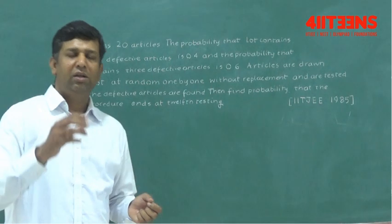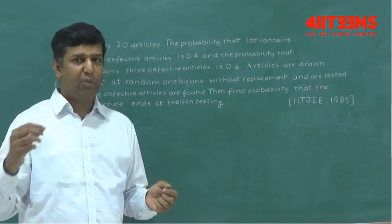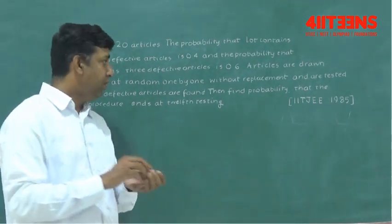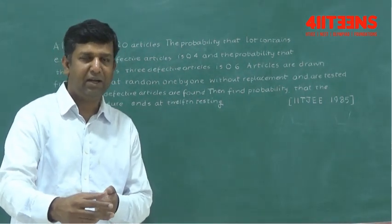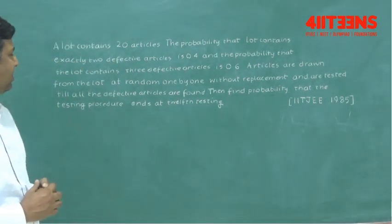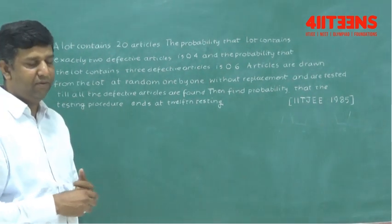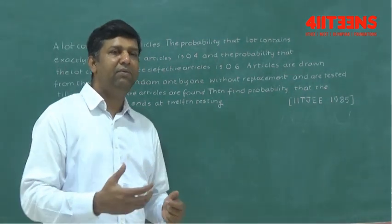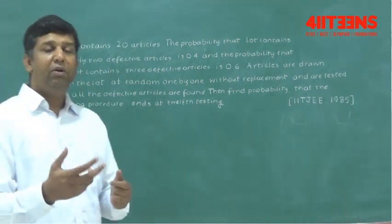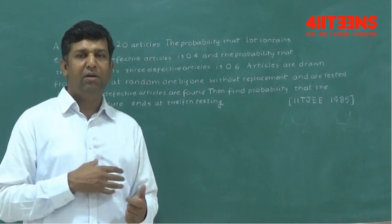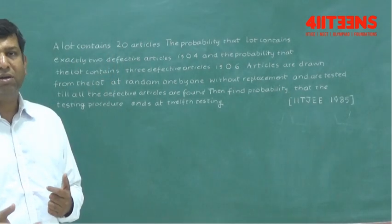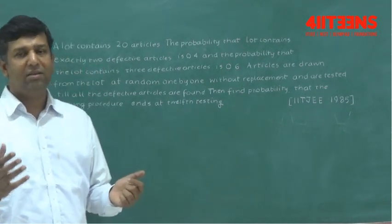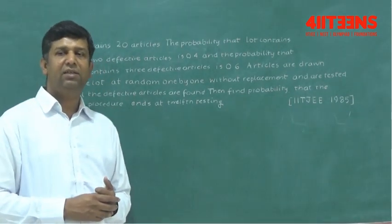Now what you do, you choose the articles one by one at random and without replacement. Without replacement means you're not keeping it back, and tested till all the defectives are found. So when you choose one by one, maybe all the 2 defectives may come in the first 2 draws, or maybe in the first and third, or maybe in the second and third. There may be many chances.